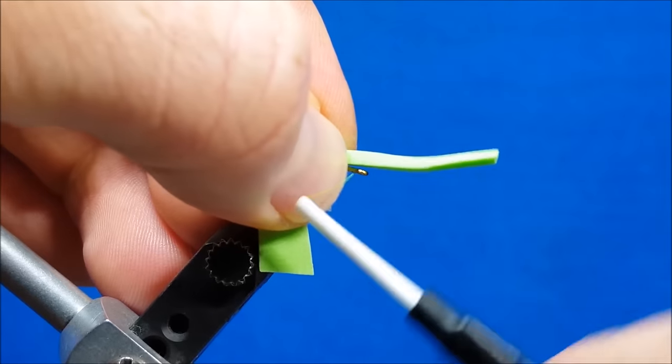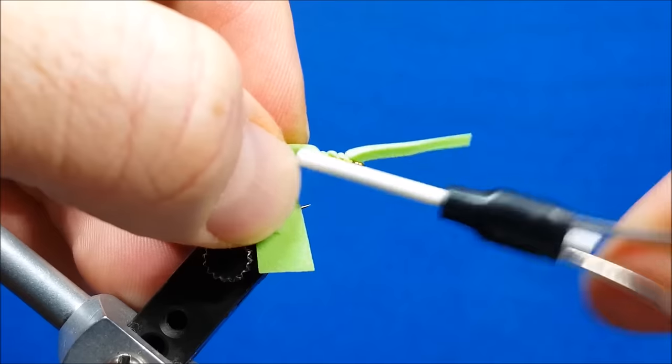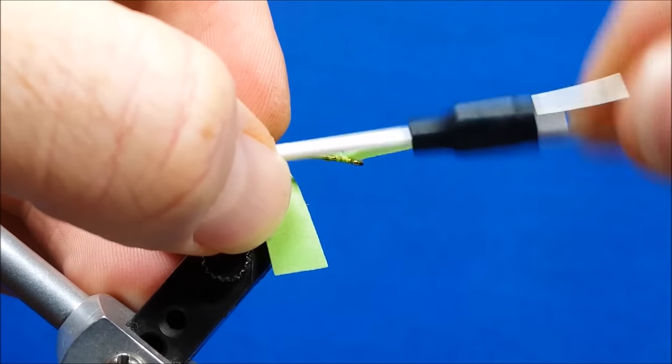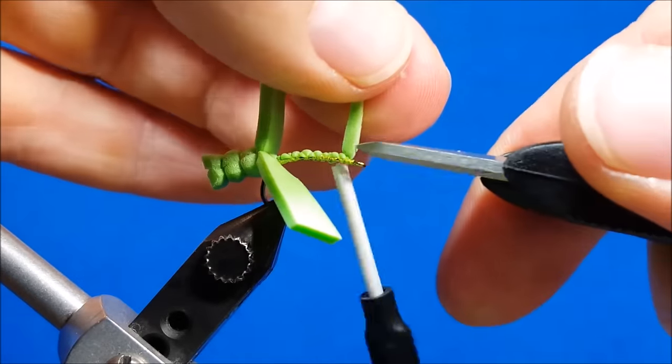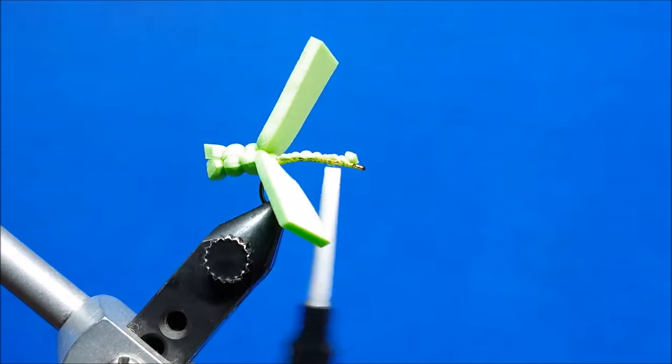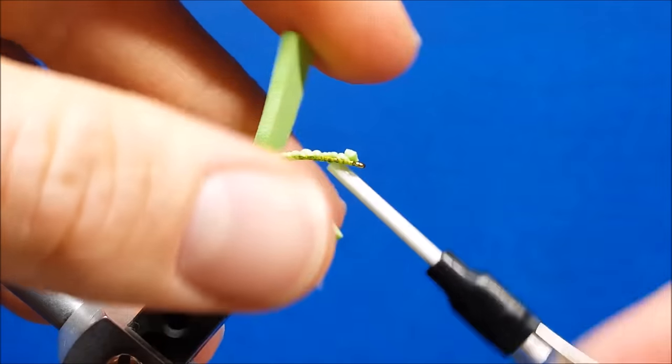I want to slide this up so that it starts on the straight part of the hook shank, and very simply, I'm going to hold that down and catch it with my thread and just work it back. At that point, I'll just take the foam, snip it off.